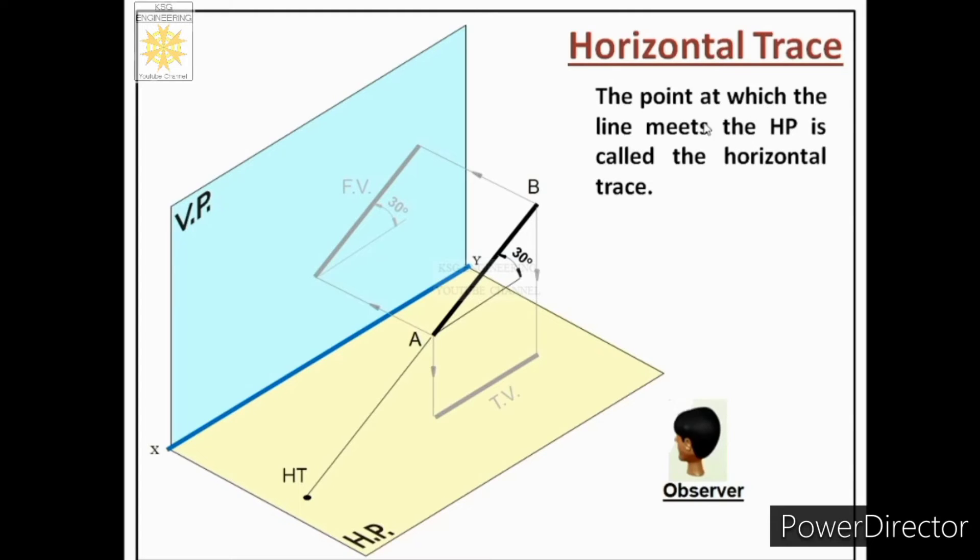The point at which line meets the horizontal plane is called the horizontal trace, and we denote it by capital HT.